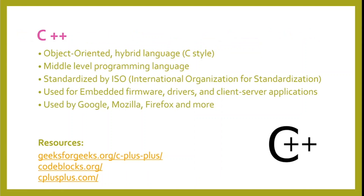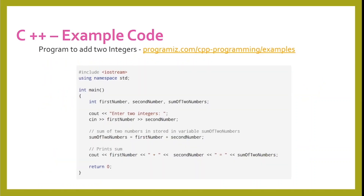C++ is an object-oriented hybrid language. It's a middle-level programming language and uses standardized ISO, which is the International Organization for Standardization. It's used for embedded firmware, drivers, and client-server applications, and is used by Google, Mozilla, Firefox, and more. Here is C++ example code programmed to add two integers.